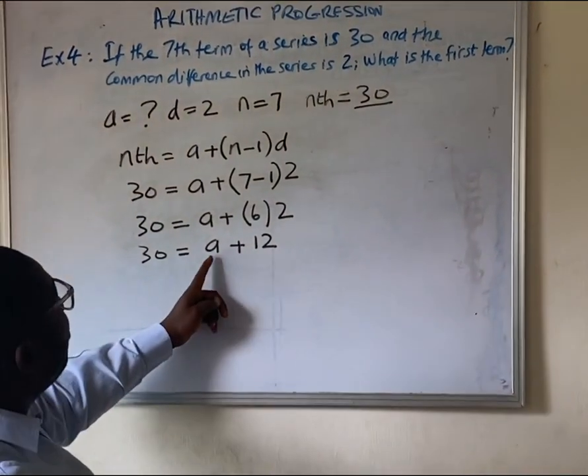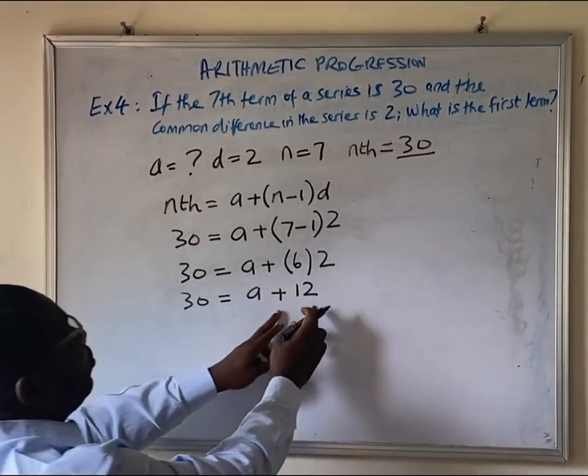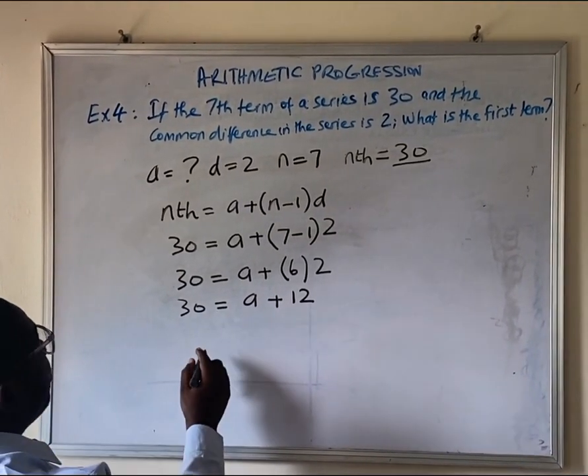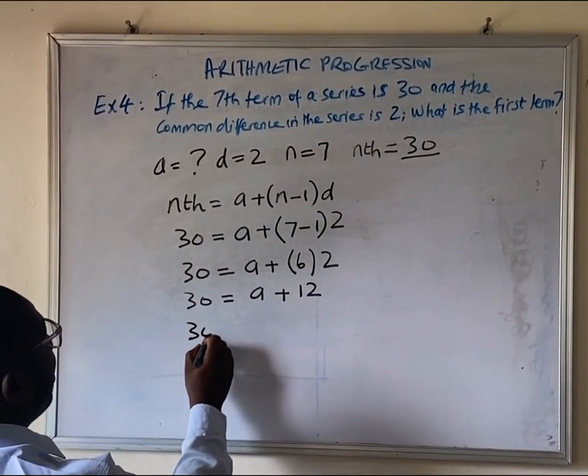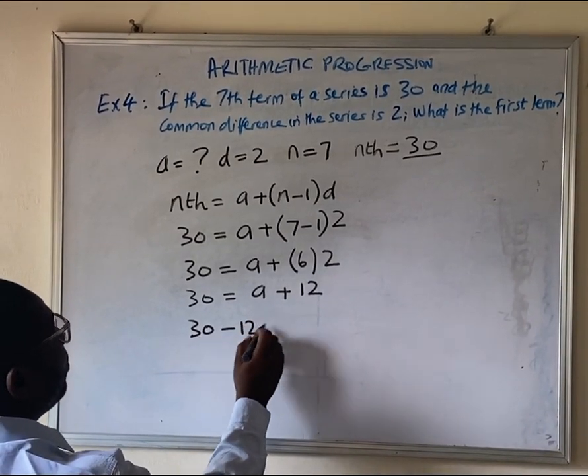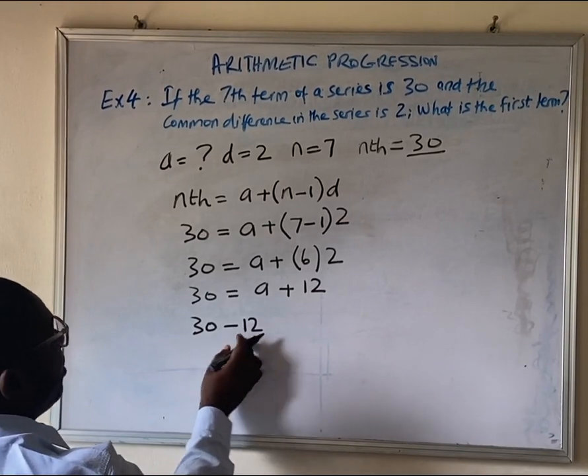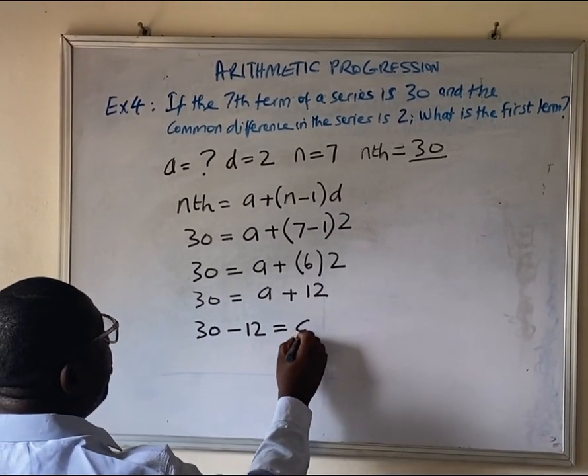Now, since we are looking for a, we have to move 12 to the other side of the equation sign. So, this becomes 30 minus 12. Plus 12, where it crosses the equation sign, becomes minus, equals to a.